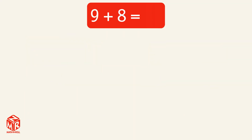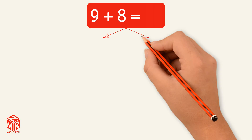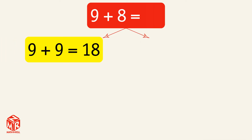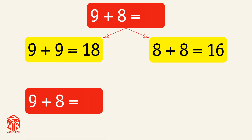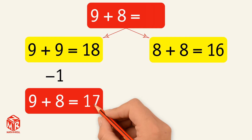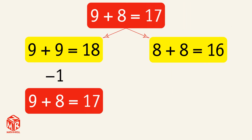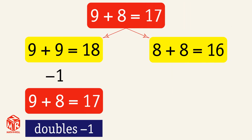Let's do another example: 9 plus 8. We can use two different doubles facts: 9 plus 9 equals 18, and 8 plus 8 equals 16. Let's use 9 plus 9 equals 18 first. We need 9 plus 8, which is one less, so we subtract 1 from the doubles fact, and we get 18 minus 1 equals 17. So 9 plus 8 equals 17. This is the doubles minus 1 strategy.